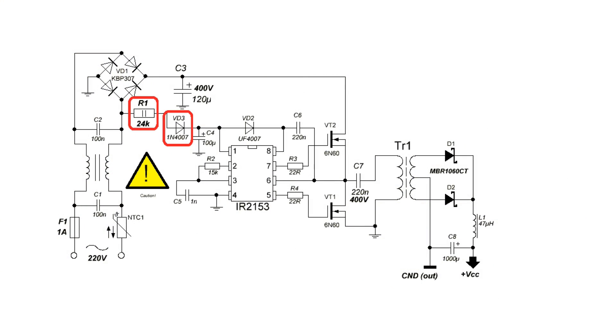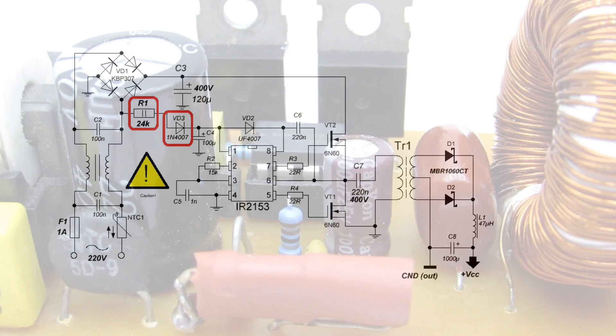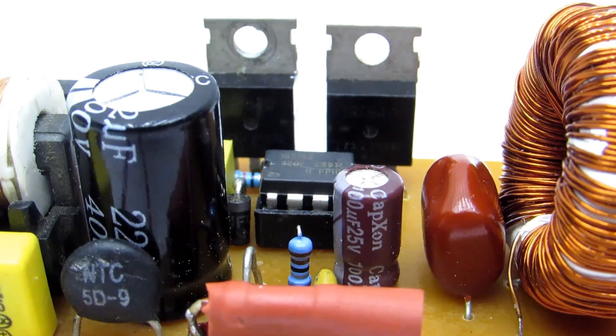Power to the chip is taken from the AC line. Current is limited by 2 watt resistor R1. Then the voltage is rectified by a low-powered diode VD3 and fits the chip. Near the chip is installed the smoothing capacitor.